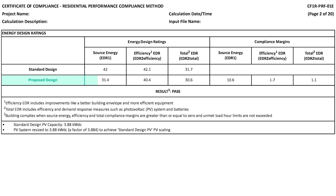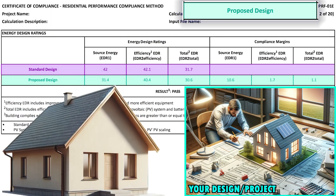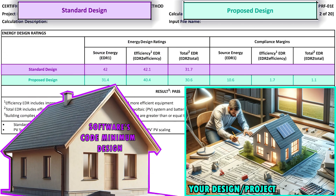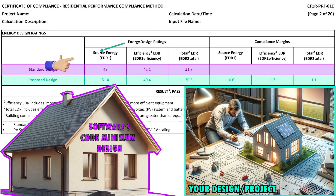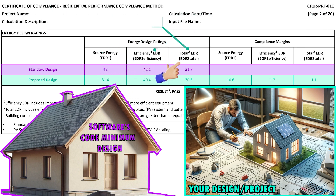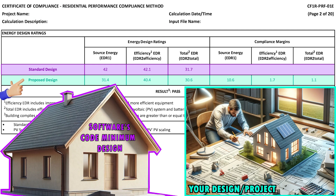The Energy Design Ratings table is a side-by-side comparison of your actual project plan, referred to as the proposed design, and a baseline model referred to as the standard design. To meet the energy efficiency requirements, the numbers in the proposed design row of your document should be equal to or better than those in the standard design. Lower numbers for source energy, efficiency EDR, and total EDR in your proposed design mean your building is expected to use less energy.